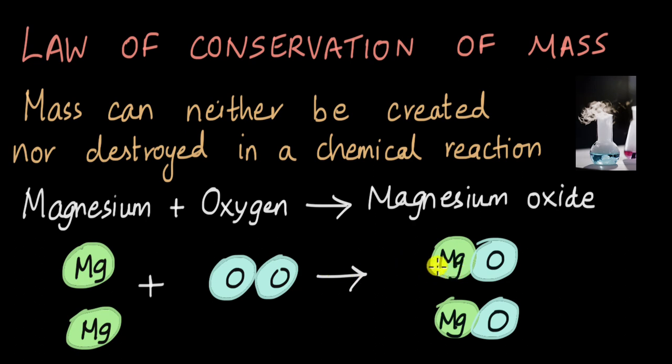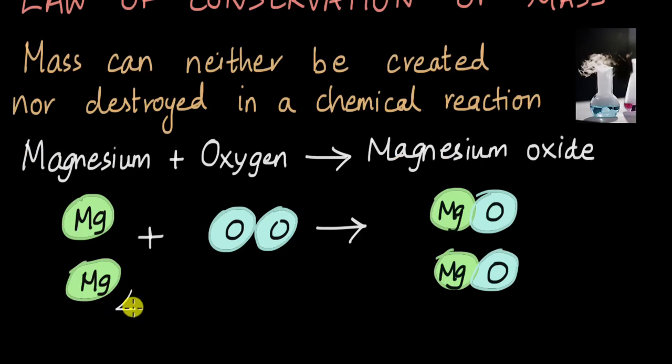We can extend this to say that no mass is created or destroyed. So if we take 48 grams of magnesium and 32 grams of oxygen, then we will get 80 grams of magnesium oxide.